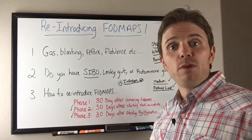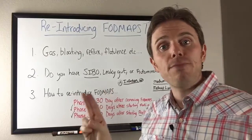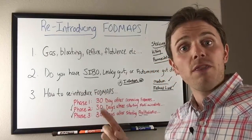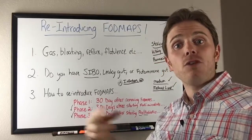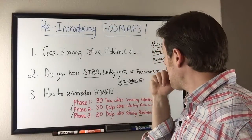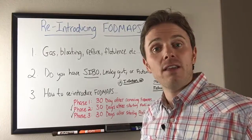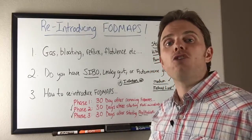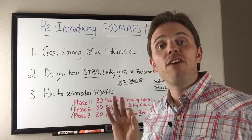Let's recap. When we reintroduce FODMAPs, we do them one at a time and start with a medium FODMAP first. We reintroduce during phase one — the starvation phase. If we have a problem, we try again during phase two, the killing phase. If we still have a problem, we add it to the list and try again during phase three — the re-inoculation phase.